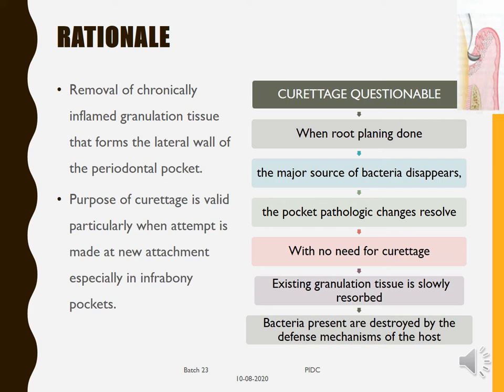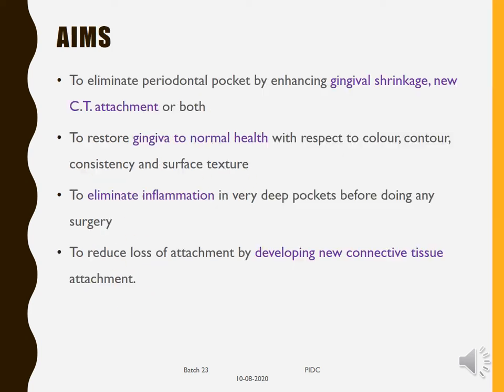We basically perform curettage for the purpose of attempting new attachment, especially in infrabony pocket regions. The aim is to eliminate the periodontal pocket by enhancing gingival shrinkage, new connective tissue attachment, or both; restore the gingiva to normal health in terms of color, contour, consistency and surface texture; eliminate inflammation in very deep pockets before surgery; and reduce loss of attachment by developing new connective tissue attachment.